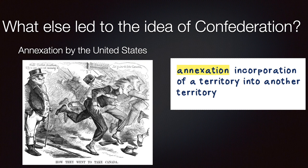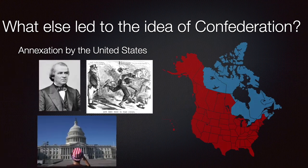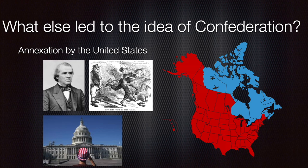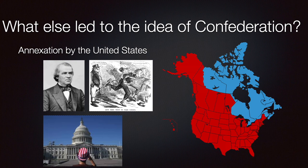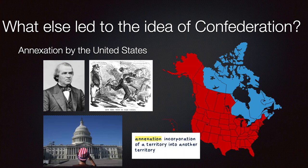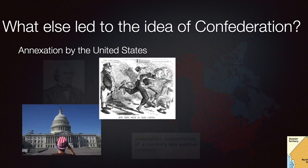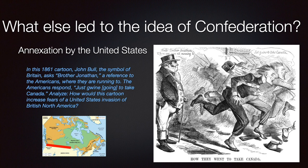The idea of annexation was also a legitimate concern for the British colonies. Annexation means incorporation of a territory into another territory — the merging of land, not necessarily through war but simply absorbing it. British North America feared that the United States would annex parts of Manitoba, Saskatchewan, Alberta, and the whole West Coast of BC, since that region — Rupert's Land — was not firmly part of British North America and was theirs for the taking.